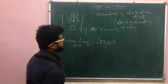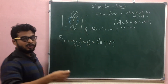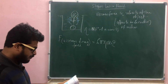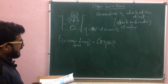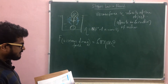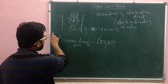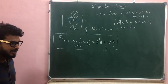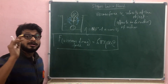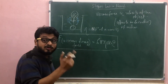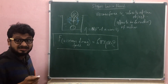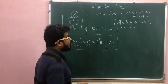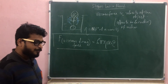The viscous drag force F is equal to 6 pi eta a v, where eta is the coefficient of viscosity, a is the radius of the sphere, and v is the velocity. This is known as Stokes Law. The viscous drag force is directly equal to 6 pi eta a into v.